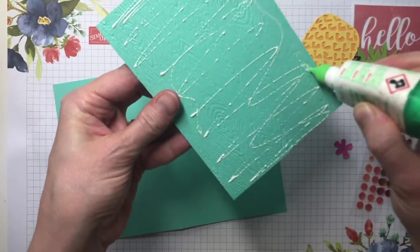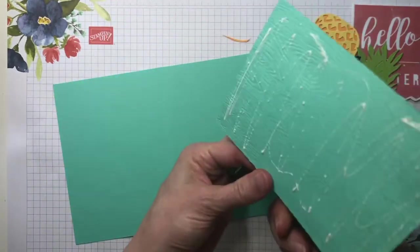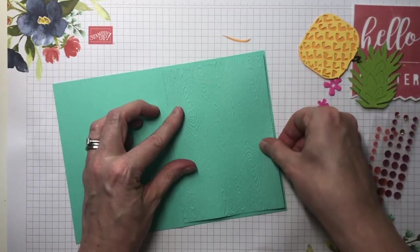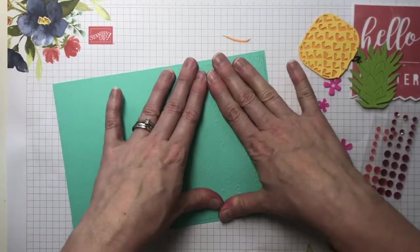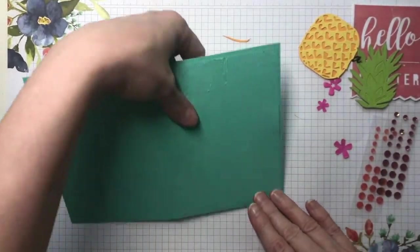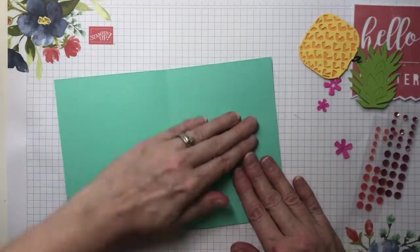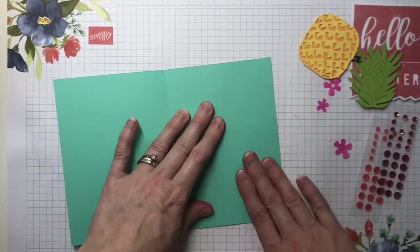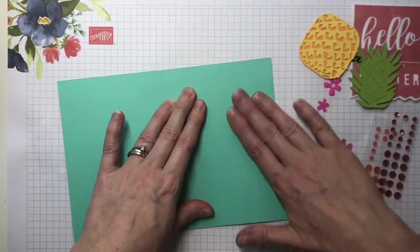Just get plenty of glue on because it's textured. Sometimes I like to flip it over and just give it a really good press down from the other side.